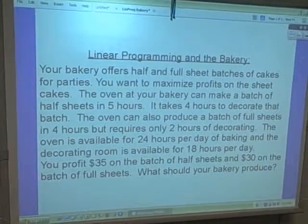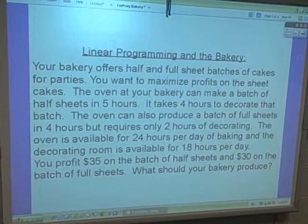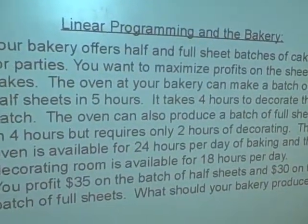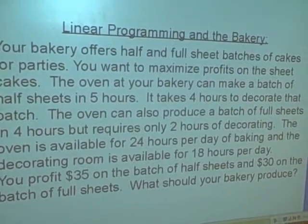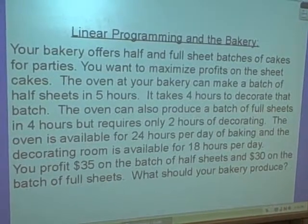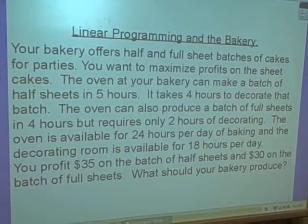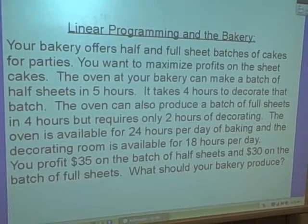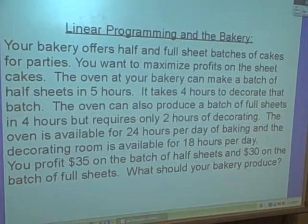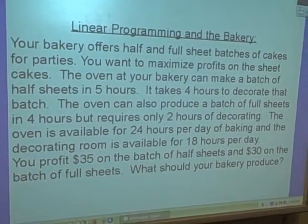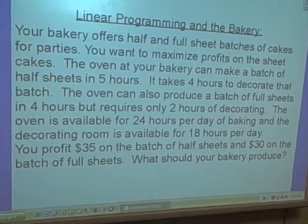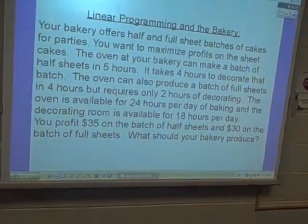Your bakery offers half and full sheets of batches of cakes for parties. You want to maximize profits on the sheet cakes. The oven at your bakery can make a batch of half sheets in 5 hours. It takes 4 hours to decorate that batch. The oven can also produce a batch of full sheets in 4 hours, but requires only 2 hours of decorating. The oven is available for 24 hours per day of baking, and the decorating room is available for 18 hours per day. You profit $35 on the batch of half sheets and $30 on the batch of full sheets. What should your bakery produce?